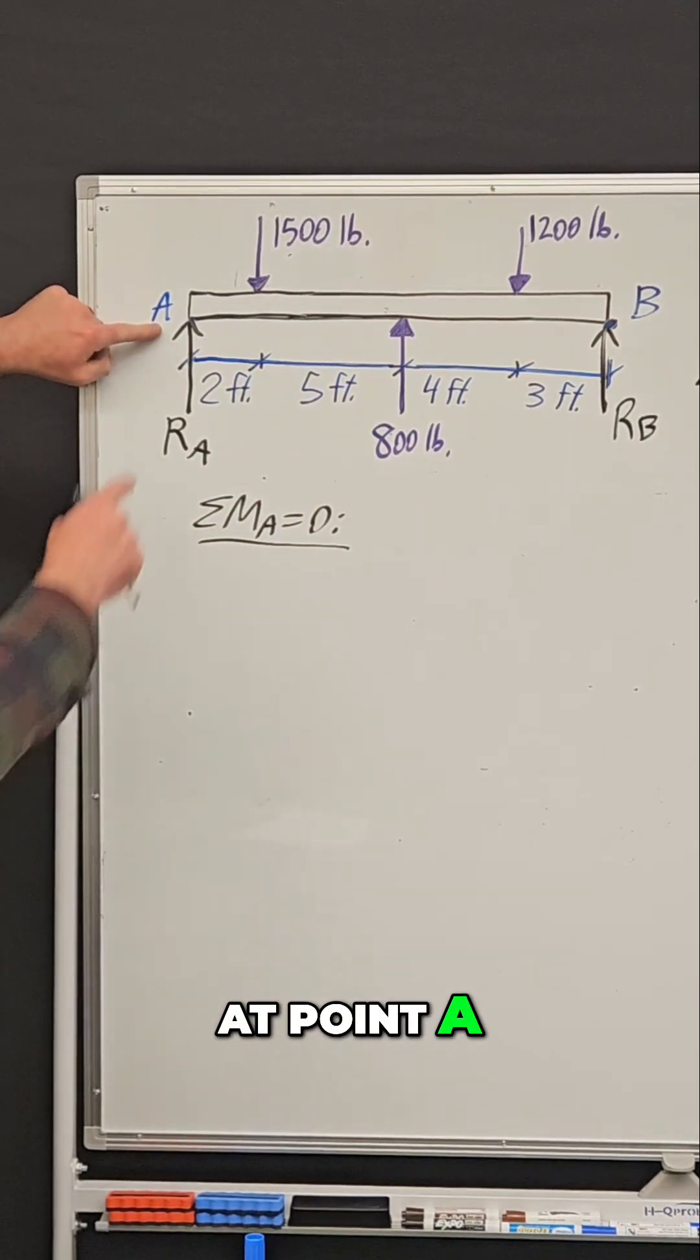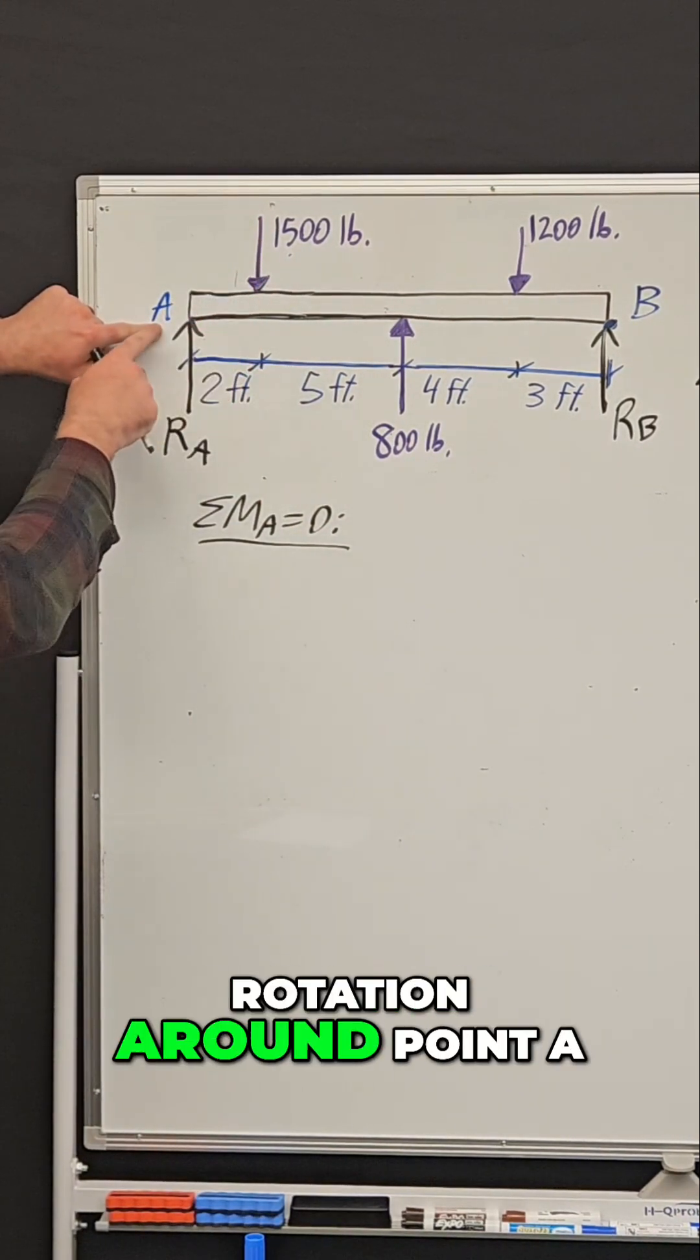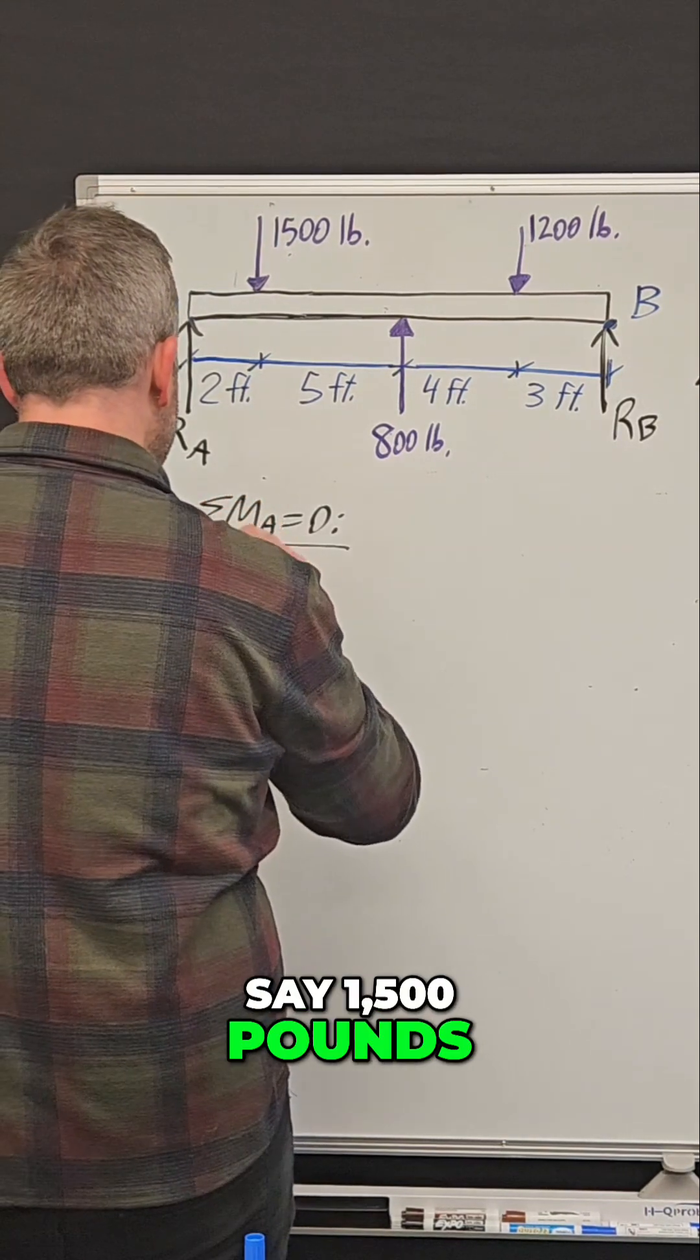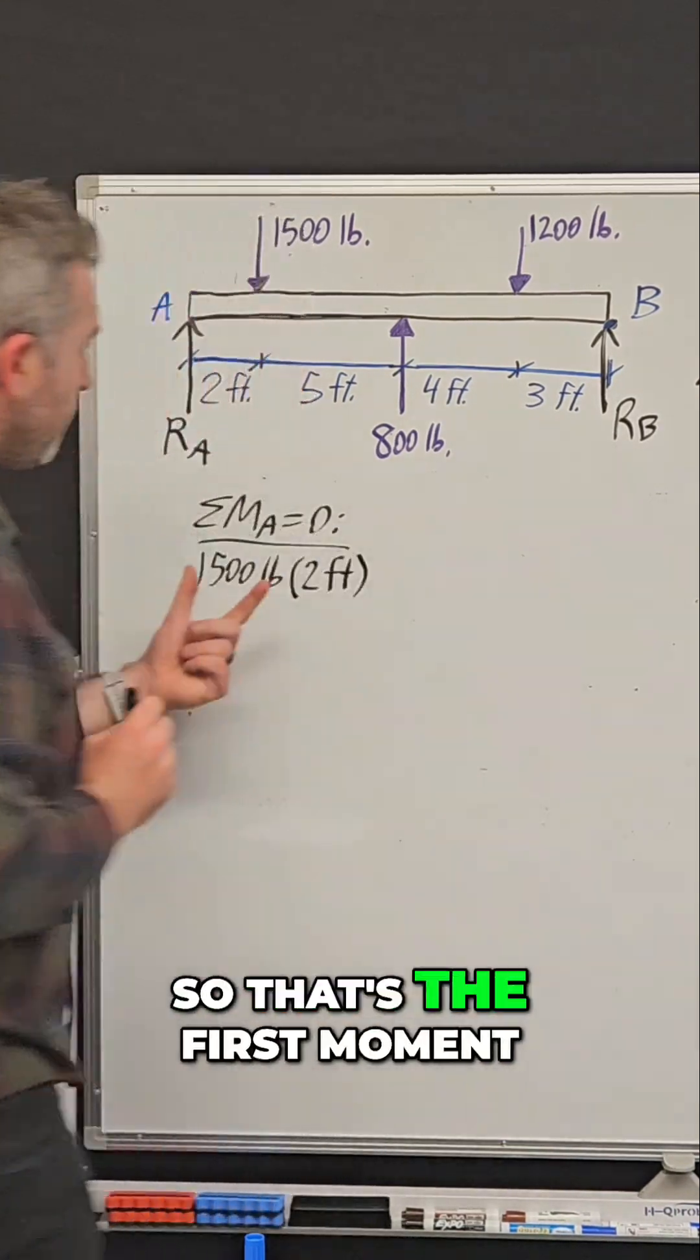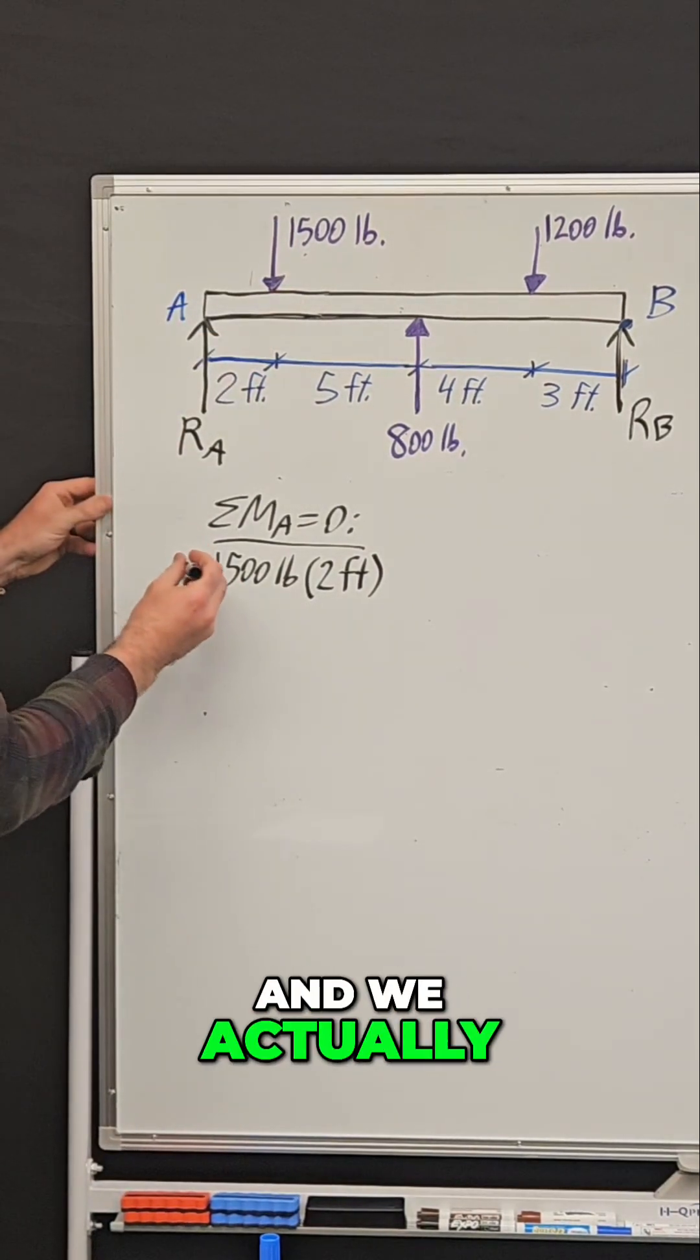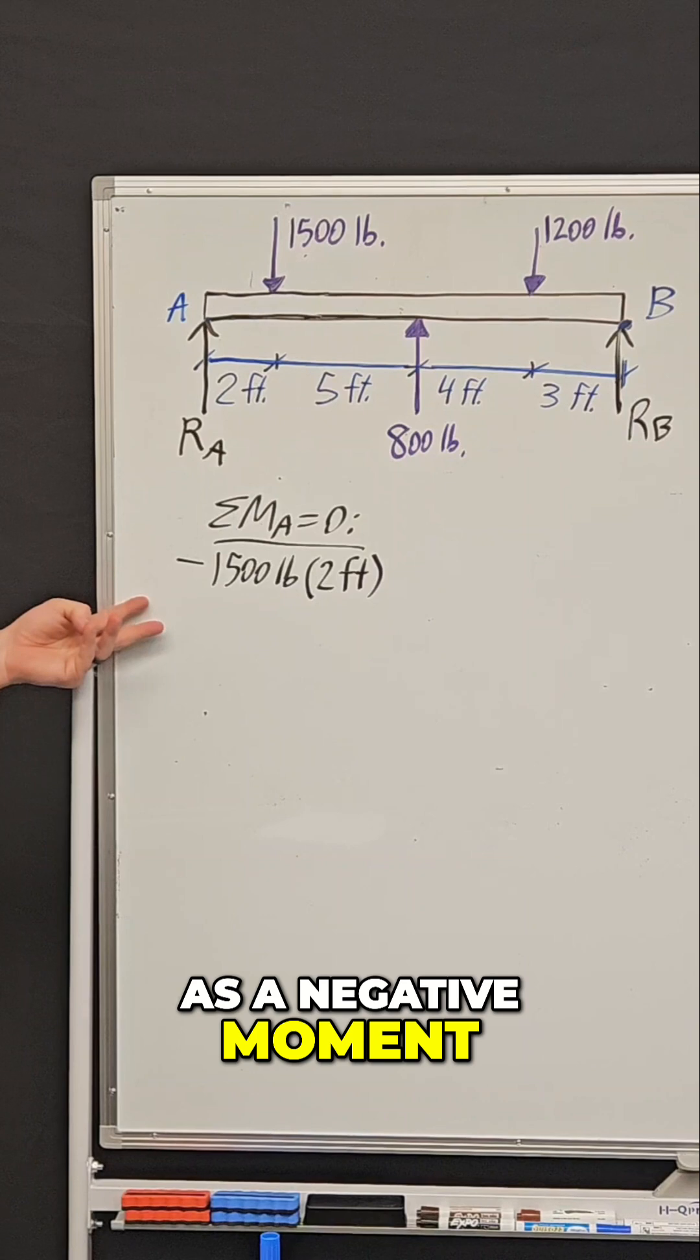We're looking at point A. The first force causing a rotation around point A is this 1,500-pound force. So I'm going to say 1,500 pounds times 2 feet. That's the first moment. This force will cause a clockwise rotation, and we define clockwise moment as a negative moment.